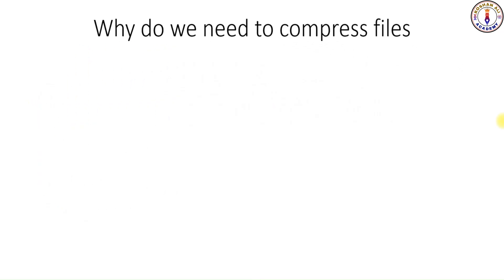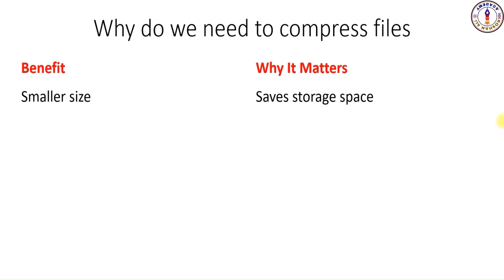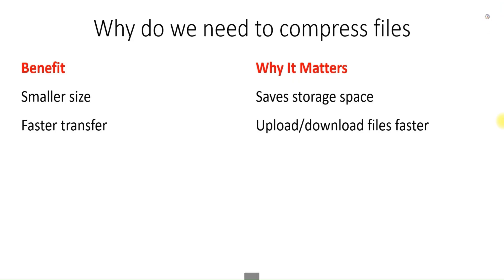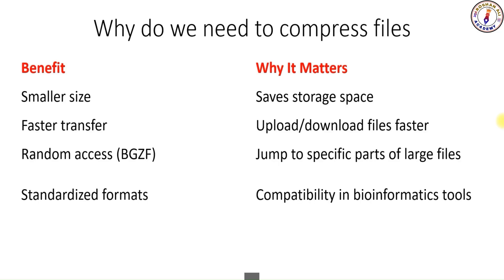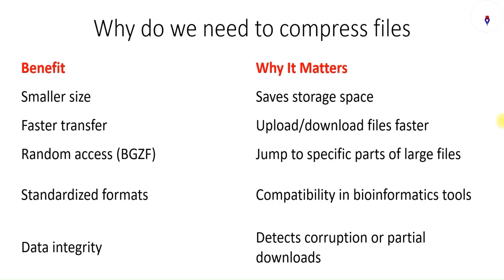Why do we need to compress files? Here are the benefits: it takes up less storage on your hard disk; files can be transferred faster from one storage device to another or uploaded faster to your emails. If you have a very large file, it can divide it into smaller portions and you can easily jump to a specific block. BGZF is a standard format which can be used in bioinformatics very easily. If a file is corrupt, it can be detected easily. Also, during download, a partial file can be detected easily.